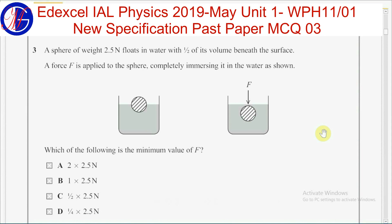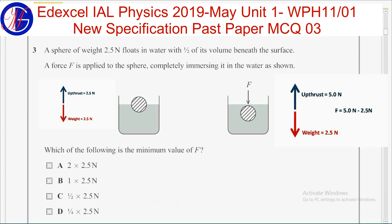Since the sphere is initially floating, the weight of the sphere is equal to the upthrust on the object, which is 2.5 N. Therefore, when the object is completely immersed in water, the upthrust should be equal to 5 N.